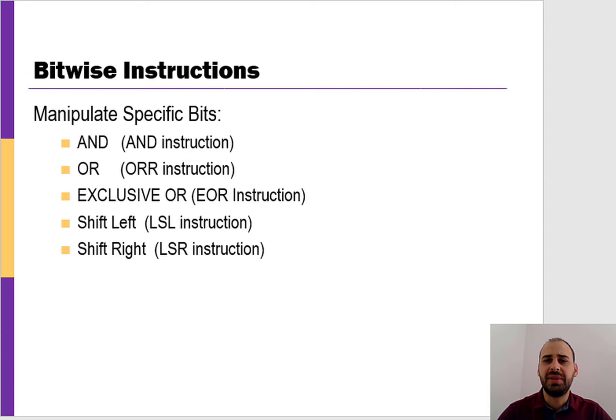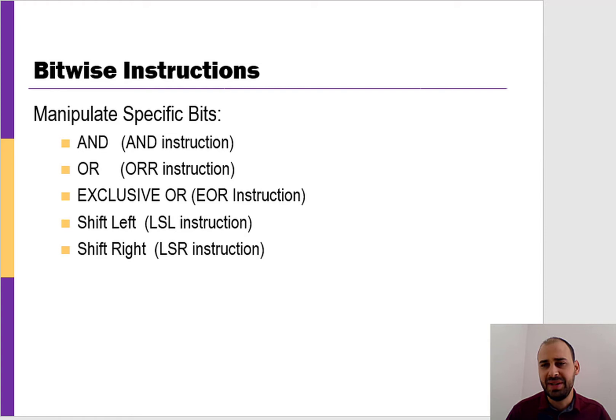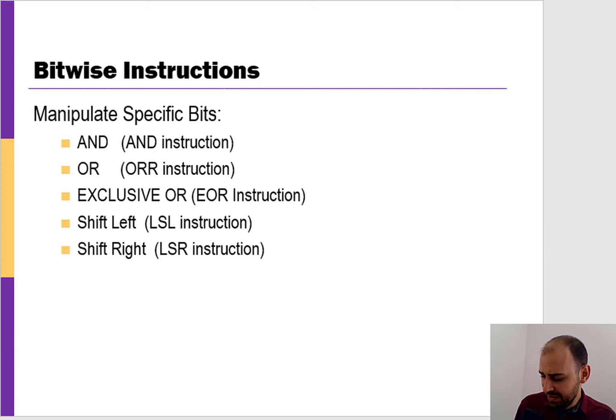When we're referring to bitwise operations — as you'd probably guess based on the name — we're dealing with ways of manipulating bits. I've listed out five instructions that are very common for doing bitwise operations. You might add an additional one like a NOT operation that flips all the bits, but that's relatively straightforward. So we're dealing at the bit level, and let's take one at a time. Let's take an AND operation.